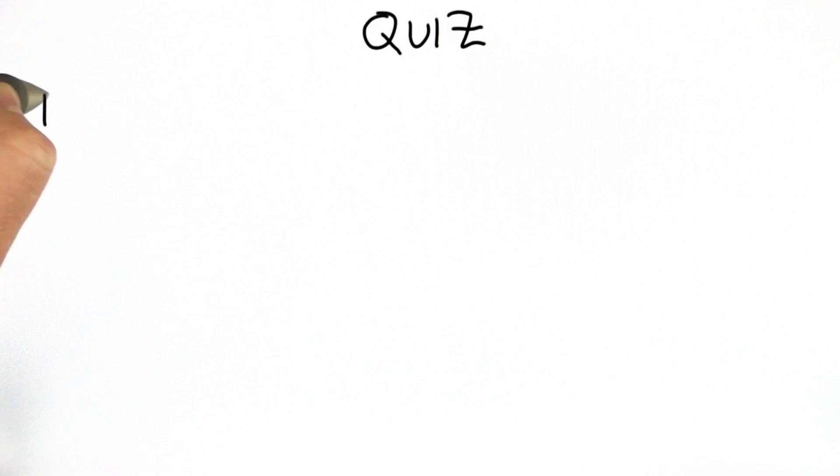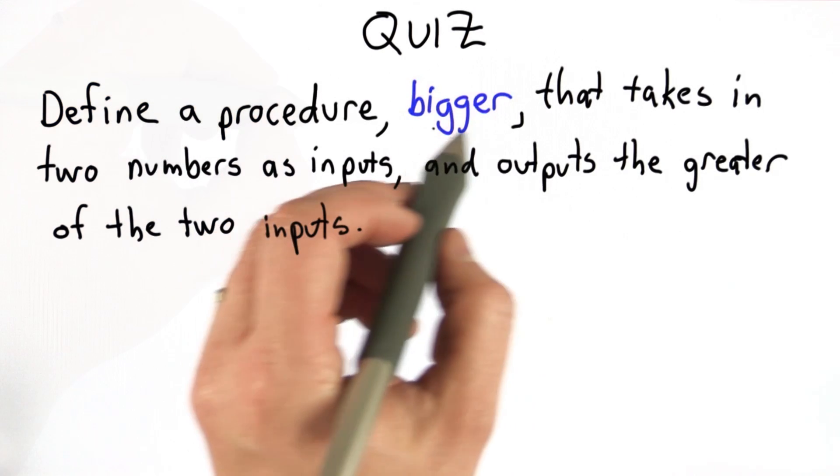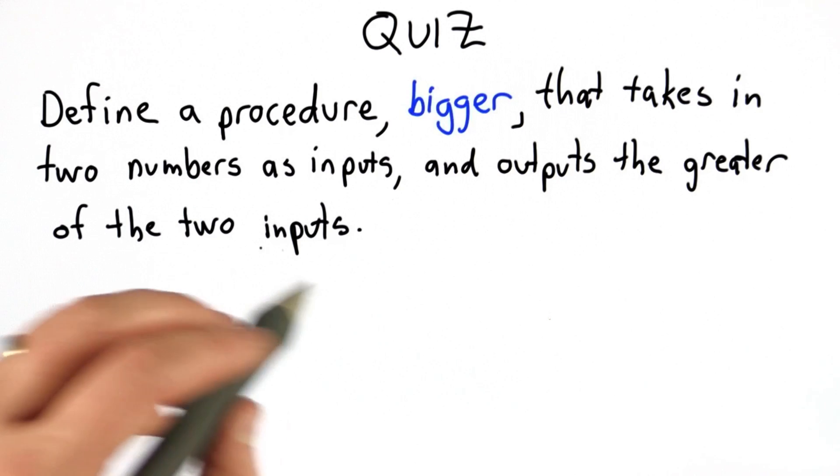So now it's time for a quiz to see if you understand how to use if, and can use it to define a procedure. Your goal for this quiz is to define a procedure, called bigger, that takes in two numbers as its inputs, and it outputs the greater of the two inputs.